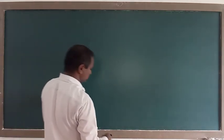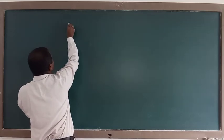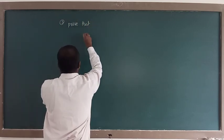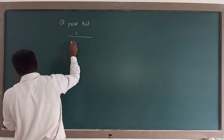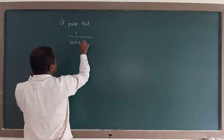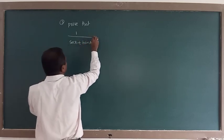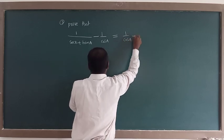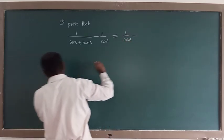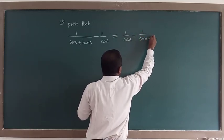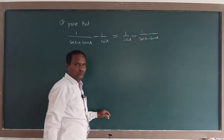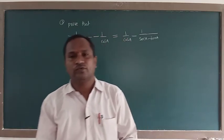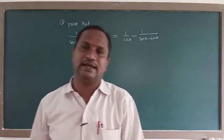Third question — prove that: 1 by secant A plus tan A, minus 1 by cos A, is equal to 1 by cos A minus 1 by secant A minus tan A. We have to check whether the left-hand side and right-hand side parts are equal. What we get for LHS we should also get for the right-hand side part.